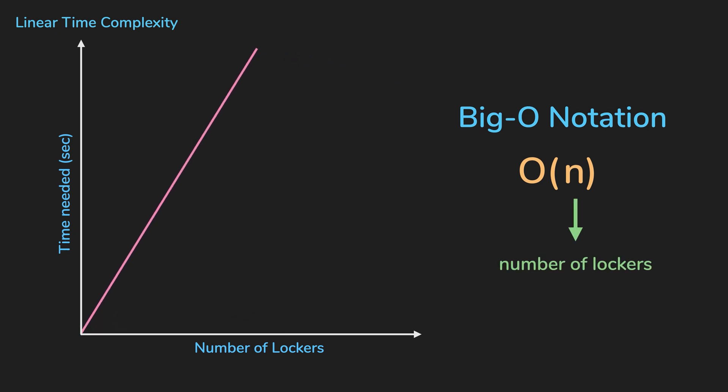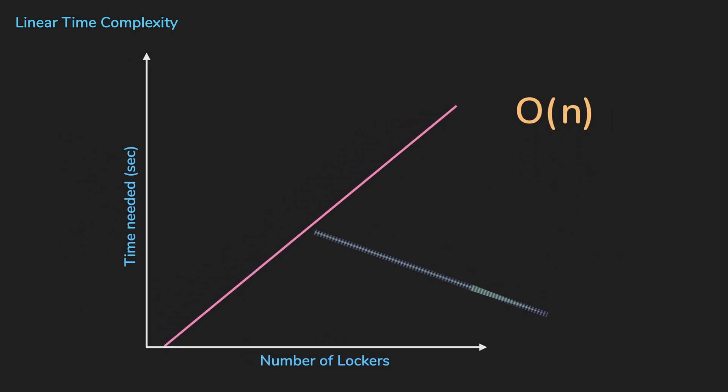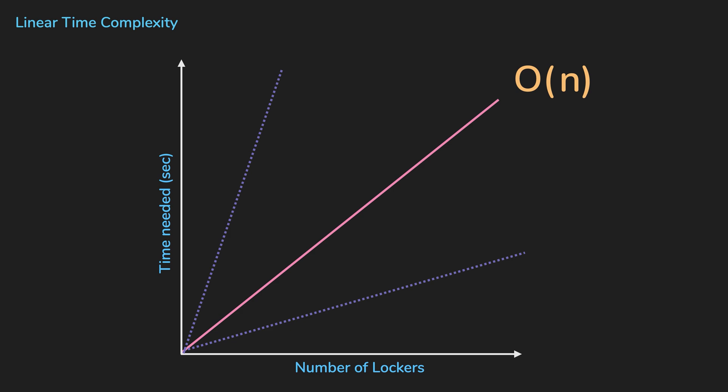No matter how the line graph looks, when the time increases linearly to the input, the big O of the algorithm will still be O of N. For example, if it takes you three seconds to check one locker instead of one second, or you're super fast and it only takes you half a second to check a locker, you might find the book slower or quicker, but the big O of finding the book will still be O of N.